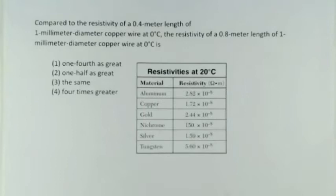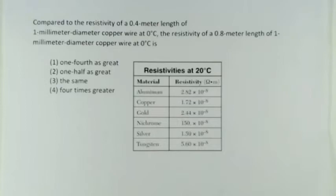Let's look at another one. Compared to the resistivity of a 0.4-meter length of one-millimeter-diameter copper wire at 0°C, the resistivity of a 0.8-meter length of one-millimeter-diameter copper wire at 0°C is what? Four choices are given. This is a bit of a trick question because it doesn't ask about resistance — it asks about resistivity.